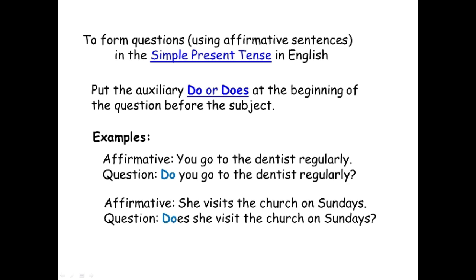An example of an affirmative sentence is: you go to the dentist regularly. So how do we form the question using do? Do you go to the dentist regularly? You will notice that do is placed at the beginning of the question before the subject you. Next example — affirmative sentence: she visits the church on Sundays. Now how did we form the question?